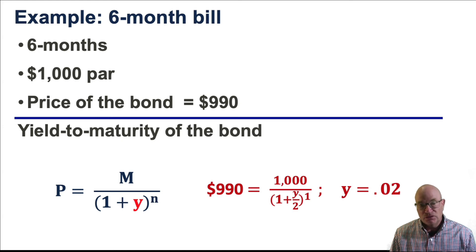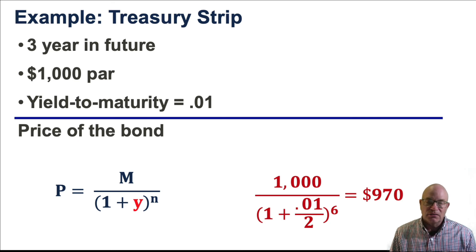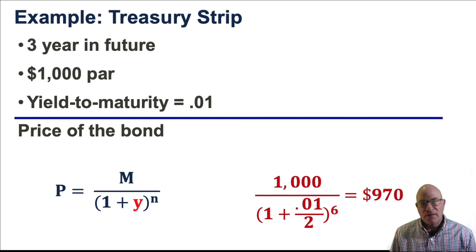One further example: let's take a three-year Treasury principal strip. We're going to receive $1,000 three years in the future, and our yield to maturity is 1%. In this case, as you can see, we discount that back six semi-annual periods — three years in the future equals six semi-annual periods. That bond would have a price of $970.